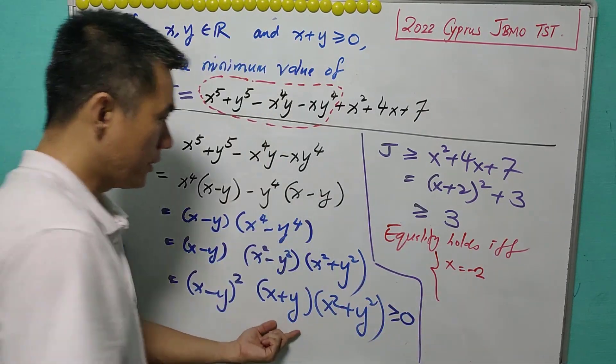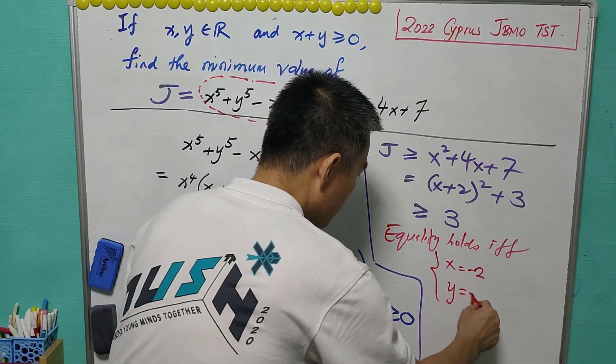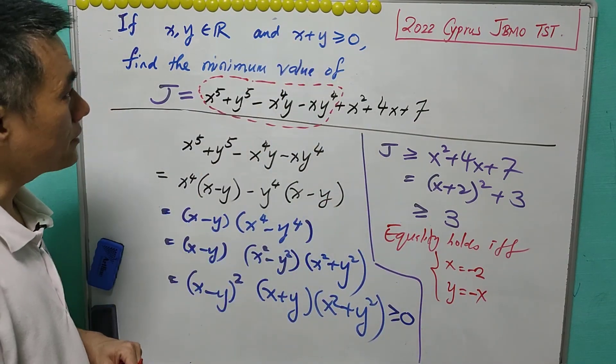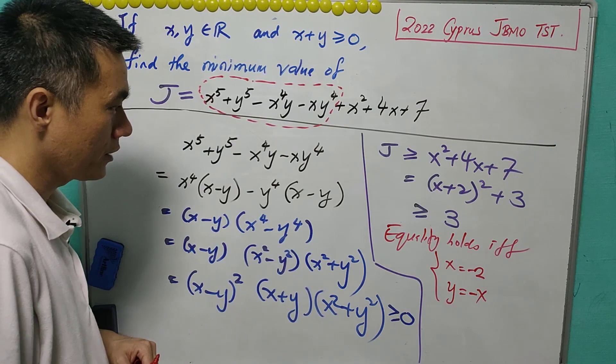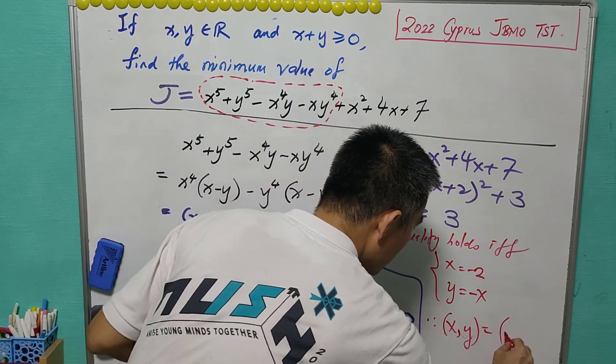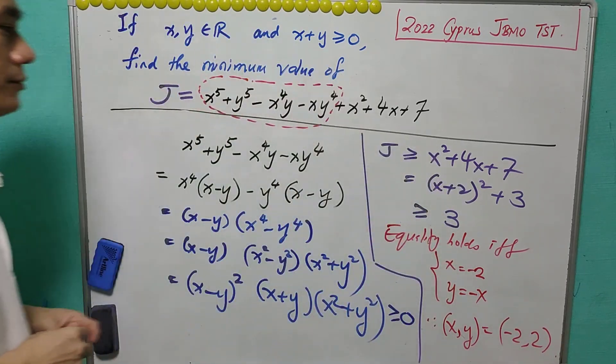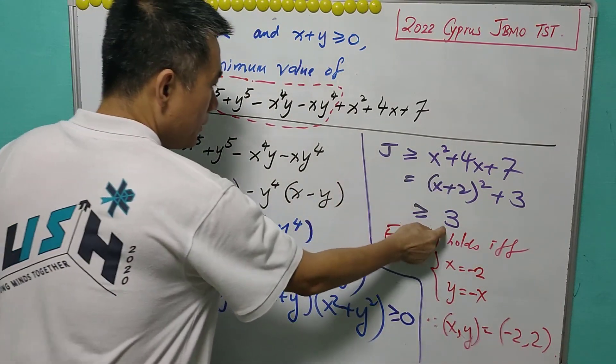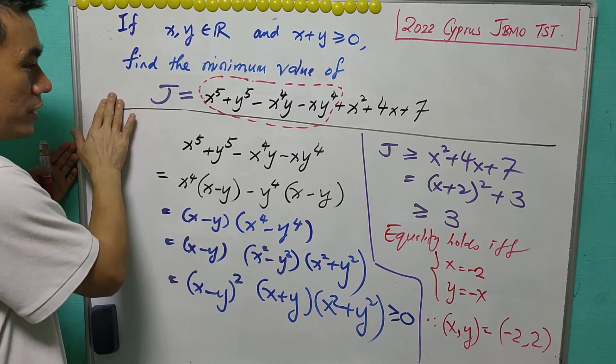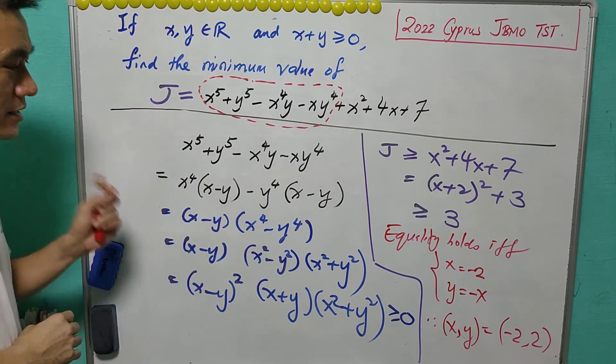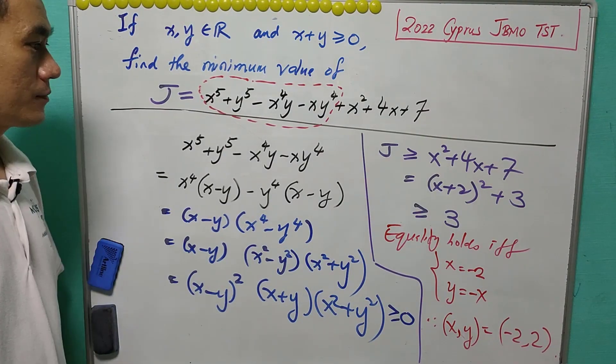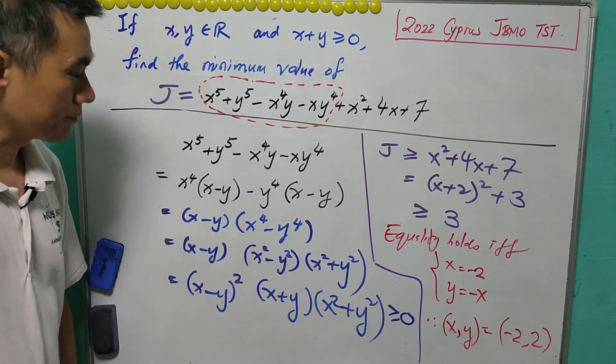Then we can choose y to be equal to a negative x. So that the sum is at least zero. So, it means that x, y equals to negative two, two. So with this, three is achievable. And therefore, the minimum value of J is equals to three. And this happens at x, y equals to negative two, two. And for now, let's look at other people's solution.